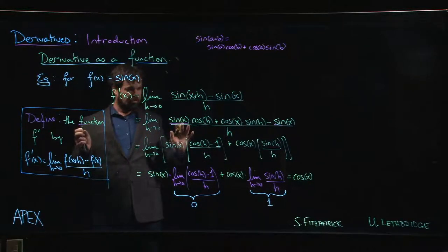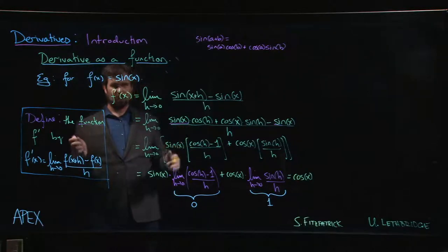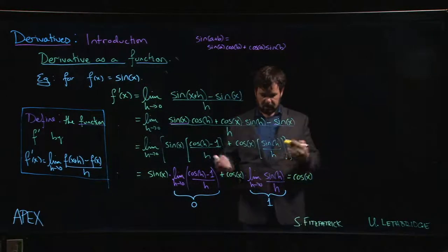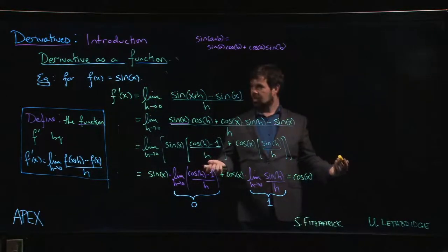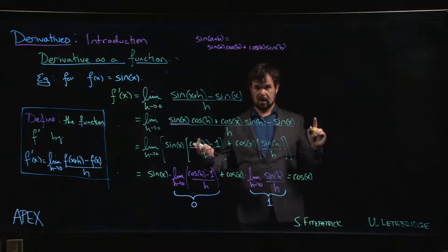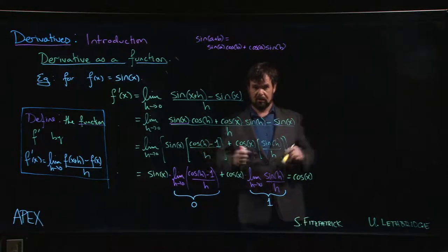This, I think, should be a fairly satisfying result. This is a nice result. The derivative of one trig function gives you another trig function. Another familiar trig function. That's a nice relationship. Now, what if we started with cos? Do we get the same thing going the other way? Stay tuned, and we'll find out in the next video.